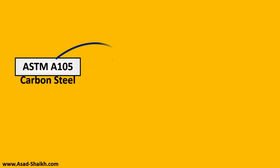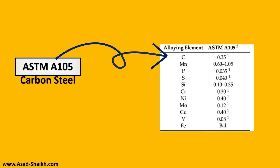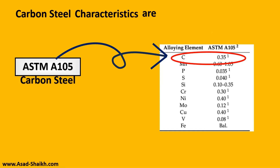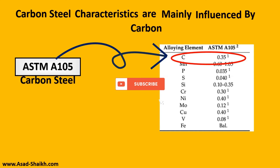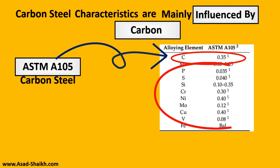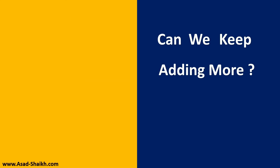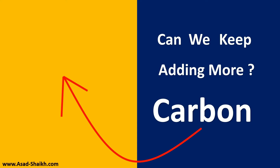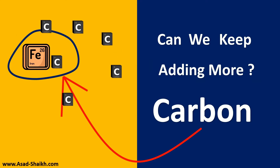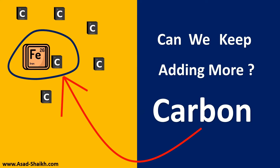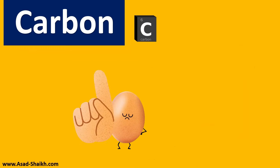ASTM A105 is a forged grade of carbon steel which is used a lot in valves. If you look at the material composition, carbon goes up to 0.35%. In carbon steel there are other elements too, but the major characteristics are influenced by carbon — hence the name carbon steel. Now, can we keep adding more and more carbon to make it stronger and stronger?